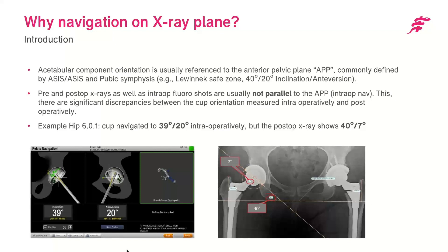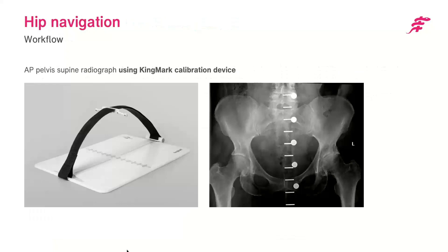Here's a visual example from a prior version of the RI Hip software through Brainlab. It shows a navigated total hip acetabular component placed at 39 degrees of inclination and 20 degrees of anteversion, and the postoperative X-ray showed 40 and 7 — differences due to the plane references we've emphasized. The King Mark device is a plate the patient lays on when getting the AP supine radiograph, with a belt running across their body where marker balls align in parallel with the posterior markers to feed into the formula.